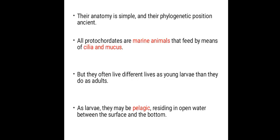The first point I want to share is that the anatomy of proto-chordates is simple — in other words, they don't have a complicated body structure. Their phylogenetic position is ancient. Another point to note is that all proto-chordates are marine animals that feed by means of cilia and mucus.